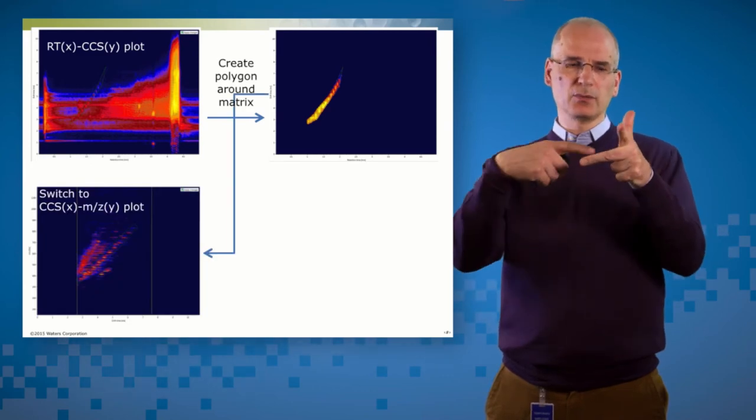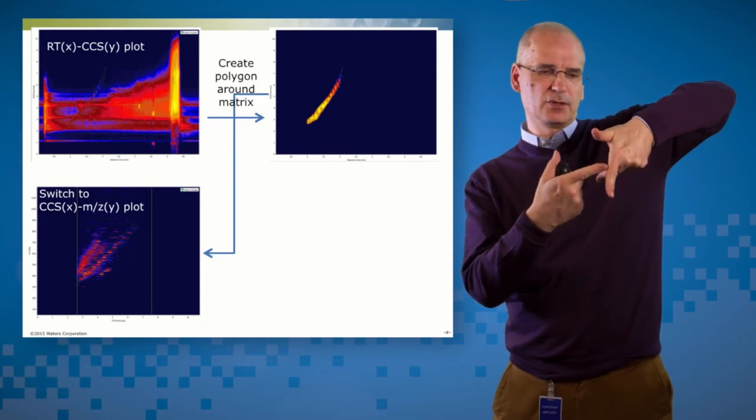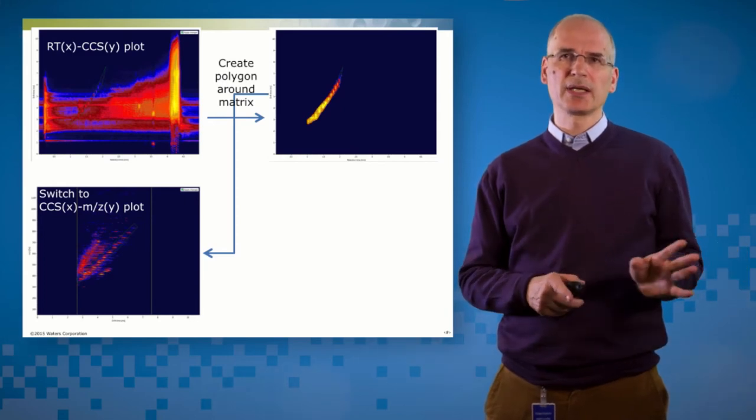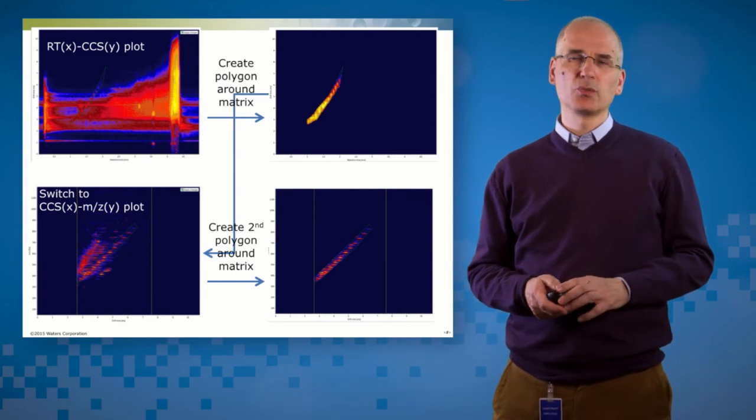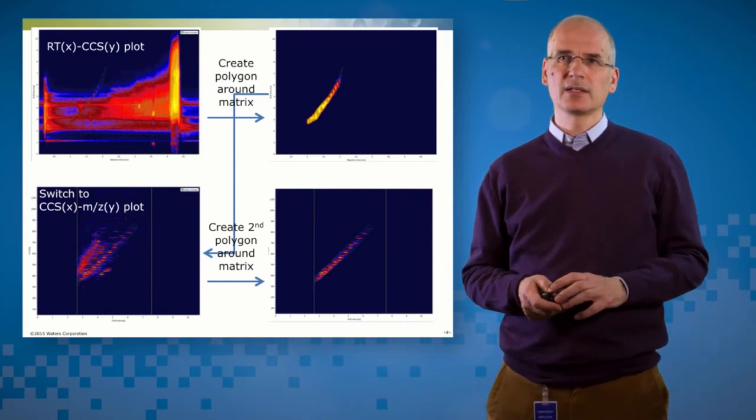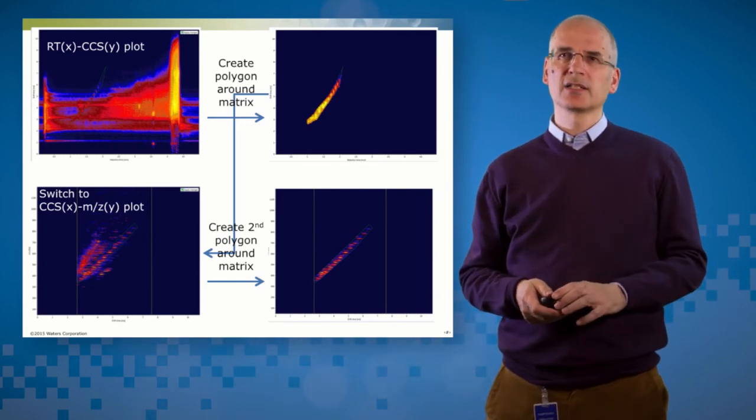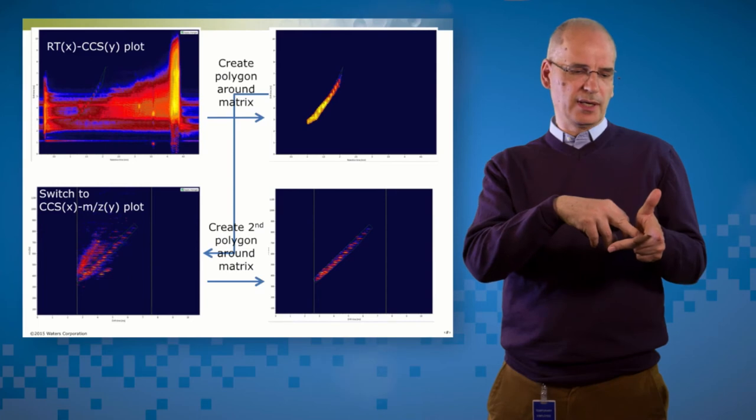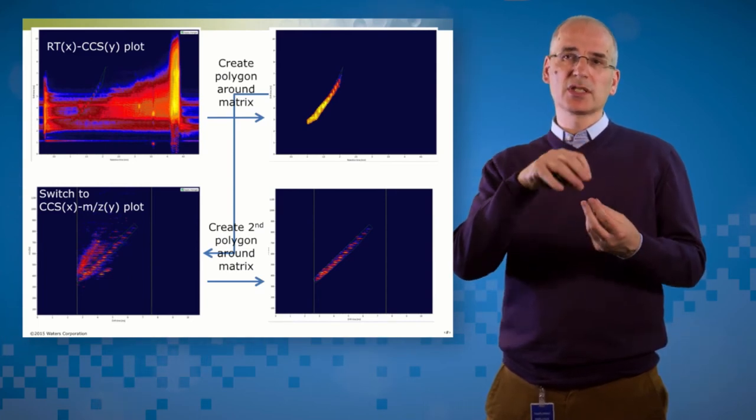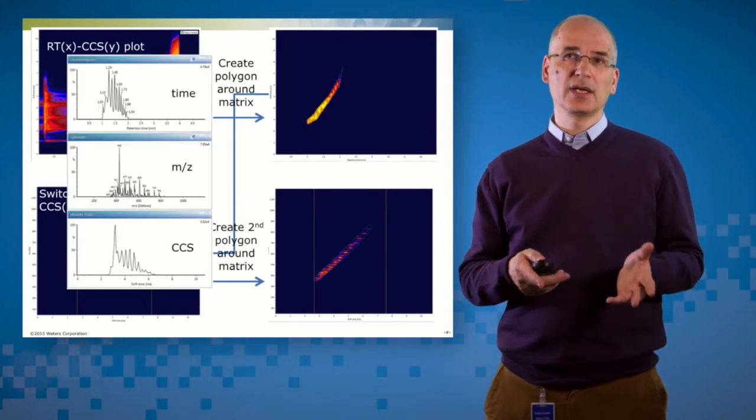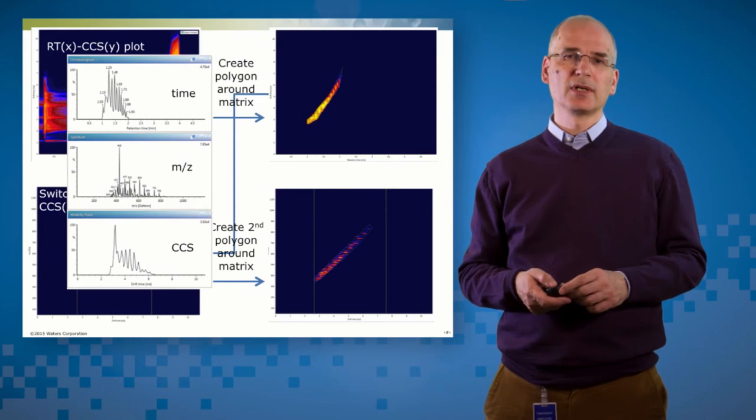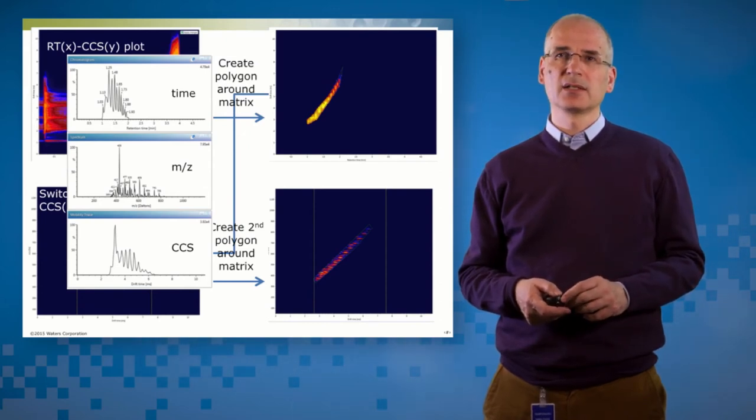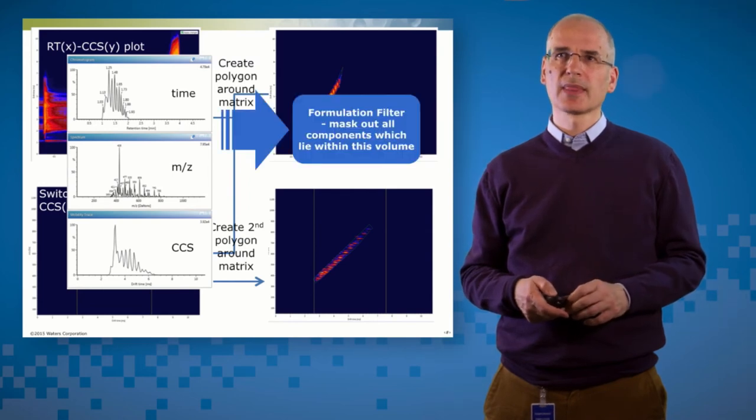And then I can change dimensions. I've switched now for those same selected components into drift time mass to charge space. So now I can create another polygon around where I know that the singly charged PEG ions elute in that orthogonal view and create a second polygon around that. So what I've effectively done is created a three-dimensional volume inside my retention time CCS mass to charge space, which is specific for polyethylene glycol. And if I look at that now, you can see here's the chromatogram in the top of all the PEG components and the spectrum of all the PEG components. And on the bottom, the driftogram, the CCS display of the various components in there too.